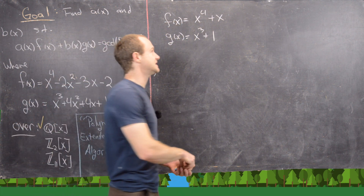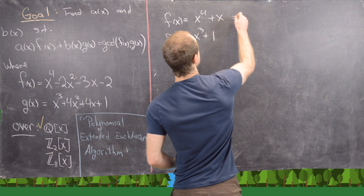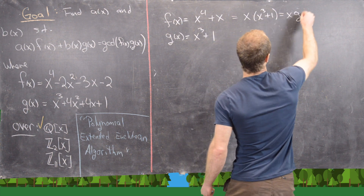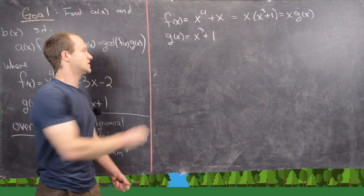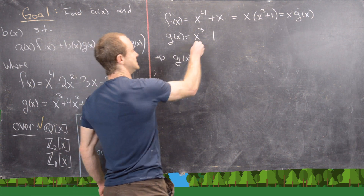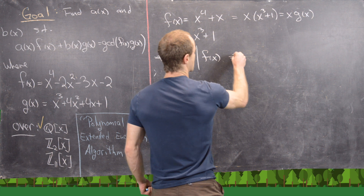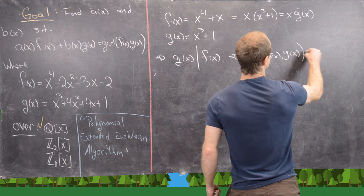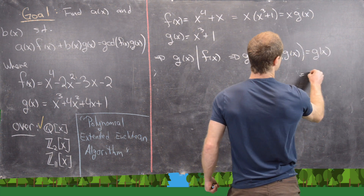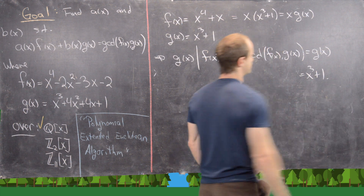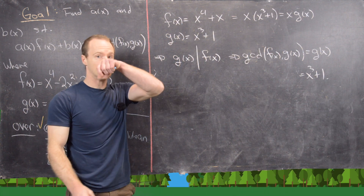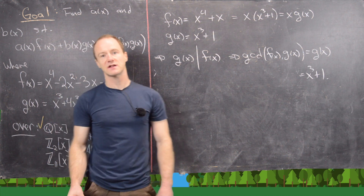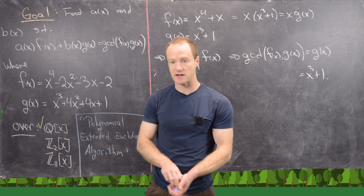Notice that f(x) = x·(x³ + 1) = x·g(x), which tells us that g(x) divides f(x). Therefore the GCD of f(x) and g(x) over Z2 is simply g(x) itself, which is x³ + 1. Since g divides f, we can trivially write the GCD as a combination: just take 1·g(x). So we have a different GCD when working over Z2.